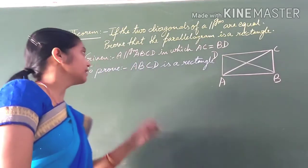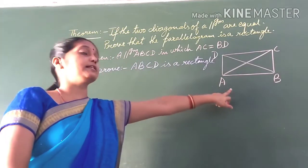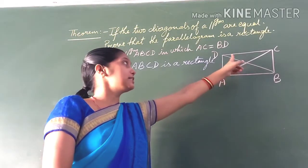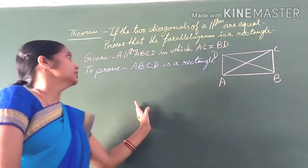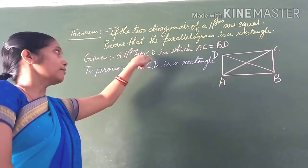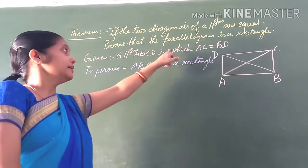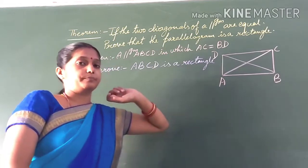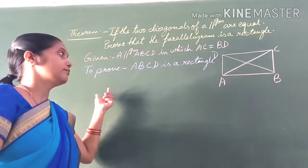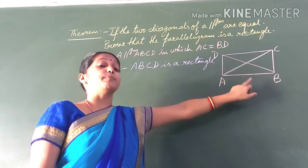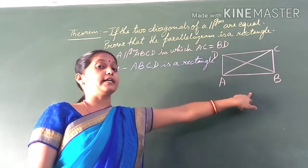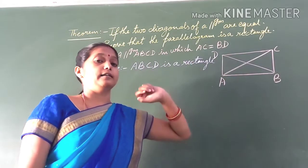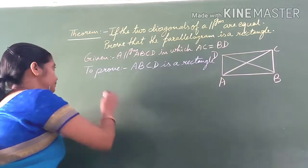First, we have given it. What do we have to prove here? We have to prove that this parallelogram is a rectangle. So we can write here: ABCD is a rectangle. Now, prove.